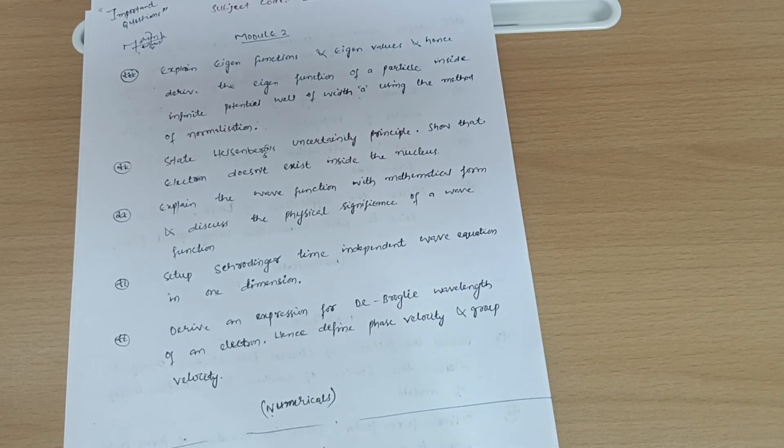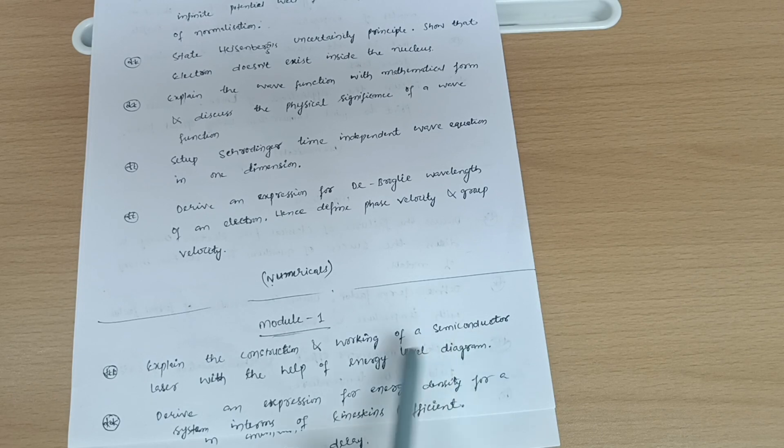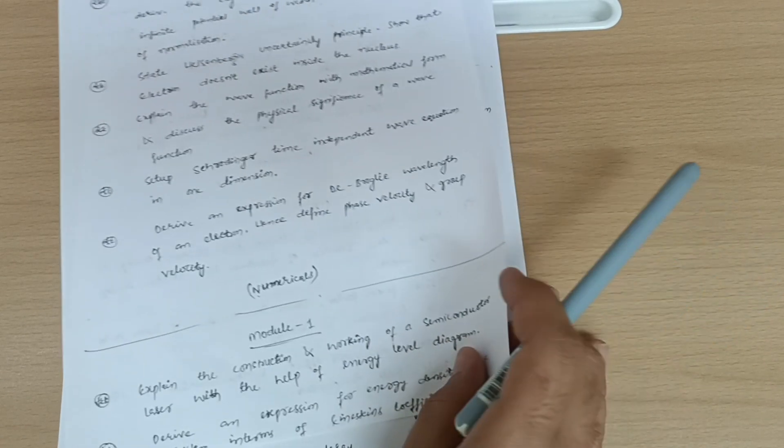Next is module first, which is again a passing module. In which you have to cover: explain the construction and working of a semiconductor laser with the help of energy level diagram. Next is derive an expression for energy density for a system in terms of Einstein's coefficient. This is again super important.